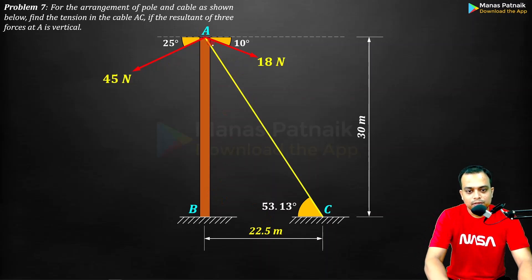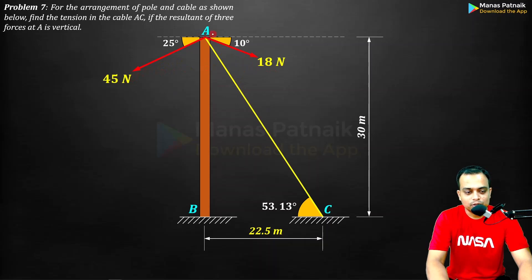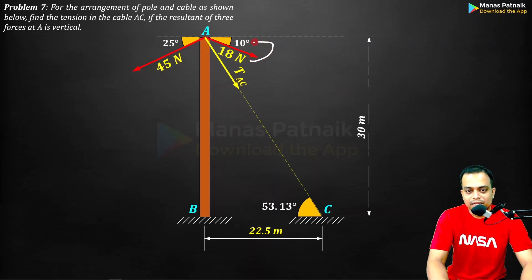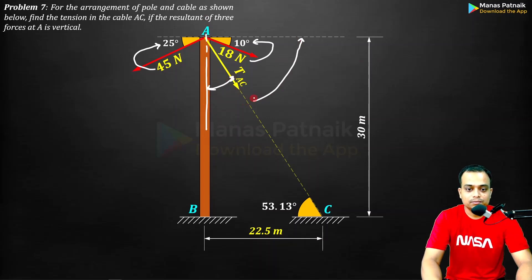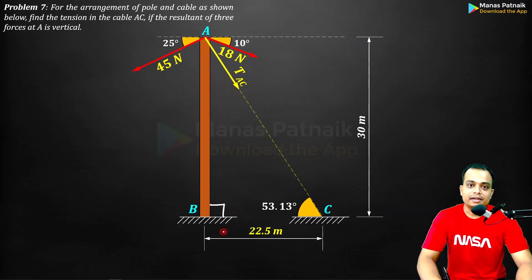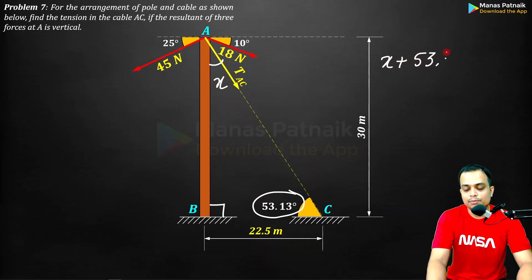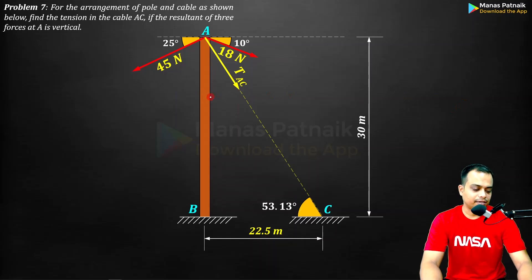This force along the cable is the tension TAC, with the angle 18 lined up along it, and 45 lined up with its respective force. The 80-newton force makes an angle of 10 degrees, and the 45-newton force makes an angle of 25 degrees. Since this is a right angle (90°), the sum of the remaining two angles must be 90°: x + 53.13 = 90°, giving x = 36.87 degrees.